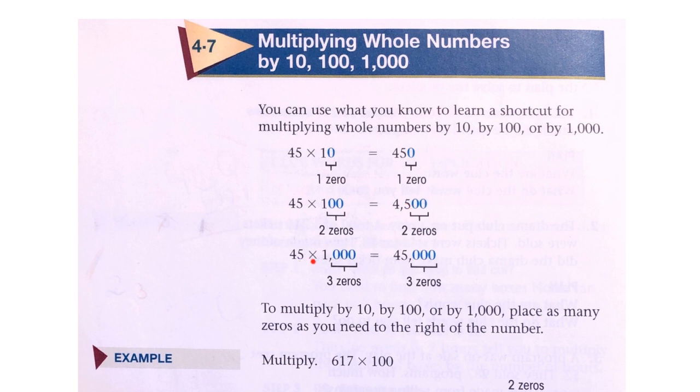45 times 1000: 1000 has three zeros, so 45 times 1000 is equal to 45 with three more zeros.